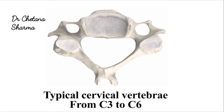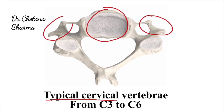In this image, you can see a typical cervical vertebra in which this is the body, these are transverse processes on each side, and this is the spine. This spine can be palpated from behind, and the transverse process can be palpated from the side of the neck.